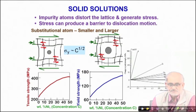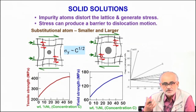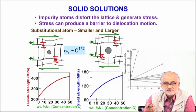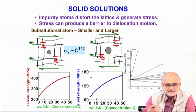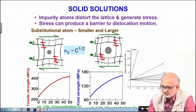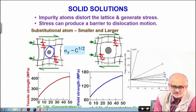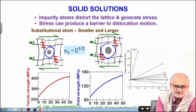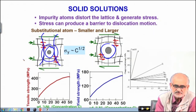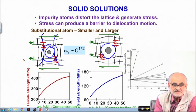The first mechanism is solid solution strengthening. Just imagine packing sugar or salt into water — they dissolve up to a certain extent and the taste changes. Similarly, in metallic crystalline systems, if you pack in atoms which are smaller in size, the lattice planes tend to collapse and move towards the smaller atom, creating a stress field around that region. This stress field is tensile in nature because the atoms are dilated.